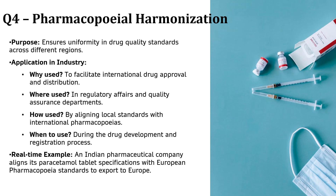Now let's talk about ICH Q4 Pharmacopoeial Harmonization. This guideline helps make sure that drug quality standards are the same across different countries. Imagine a medicine produced in India but sold in the US or Europe — if each country had different quality standards, companies would have to redesign and retest drugs for every market. ICH Q4 helps avoid this by harmonizing global standards, making international drug approvals much faster and easier. For example, an Indian pharmaceutical company wanting to sell its paracetamol tablets in Europe must align their product specifications with European Pharmacopoeia standards, ensuring the same quality, strength and composition. Thanks to ICH Q4, companies can expand globally with fewer regulatory hurdles.